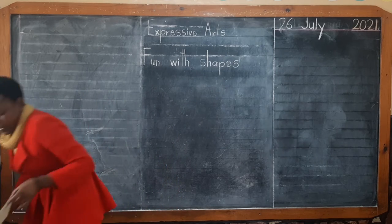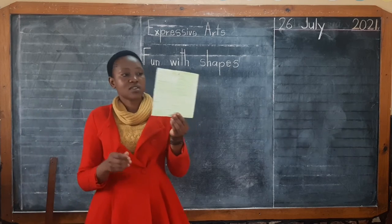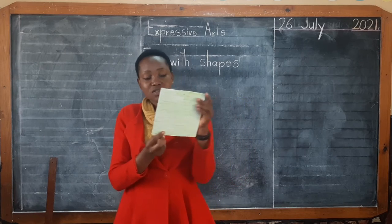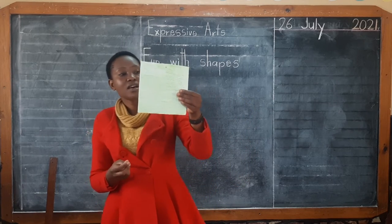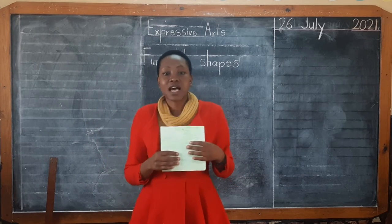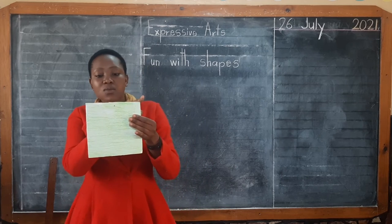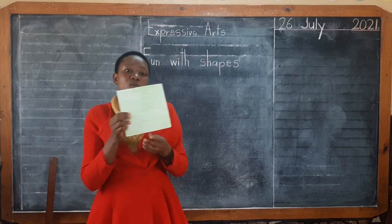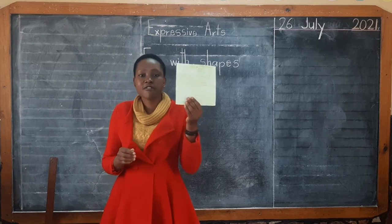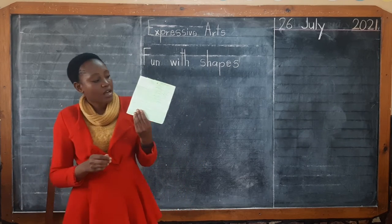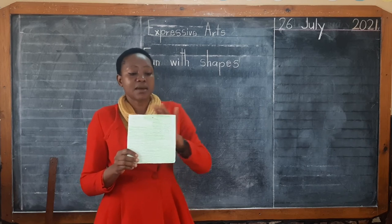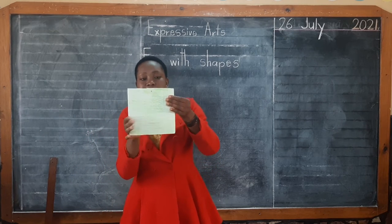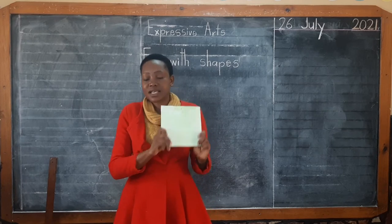Then this other shape that I am having is a square. A square has four sides as well: one, two, three, four. All four sides are the same — this side, this side, this side, and this side are all the same.